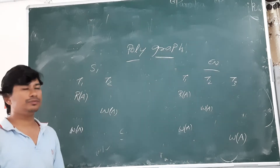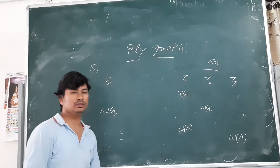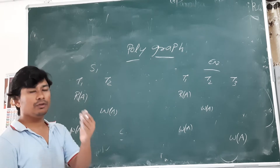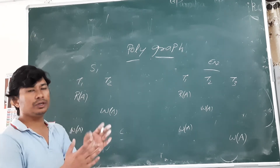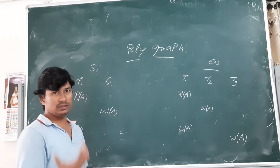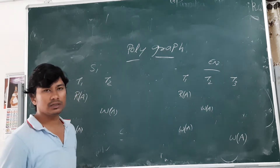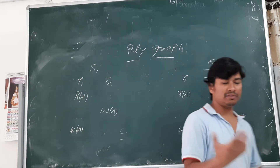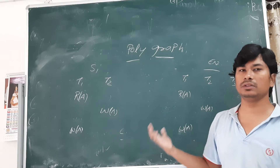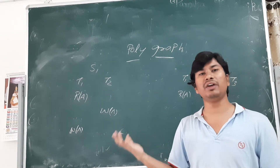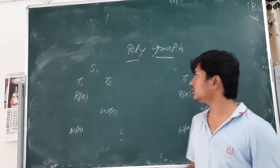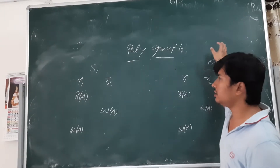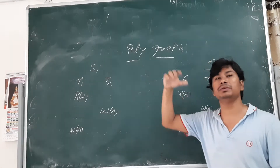Good morning students. In the last video we discussed how to check whether a given schedule is view serializable or not. We identified how many serial schedules exist and checked each one for view equivalence. The problem is that if the number of transactions increases, say 10 transactions, we have 10 factorial serial schedules to check — a tedious process. To avoid that complexity, we have another procedure called constructing the polygraph.